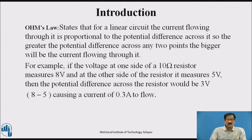Ohm's Law states that for a linear circuit, the current flowing through it is proportional to the potential difference across it. The greater the potential difference across any two points, the bigger will be the current flowing through it. For example, if the voltage at one side of a 10 ohm resistor measures 8 volts and at the other side it measures 5 volts, then the potential difference across the resistor will be 3 volts, that is 8 minus 5 volts, causing a current of 3 divided by 10 ohm, that is 0.3 ampere.